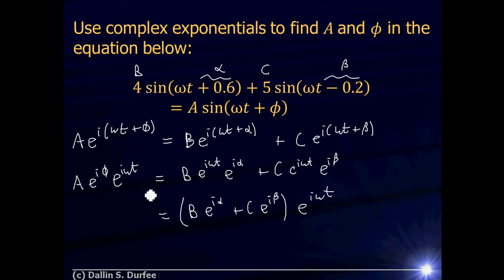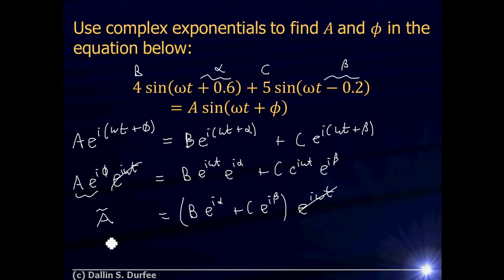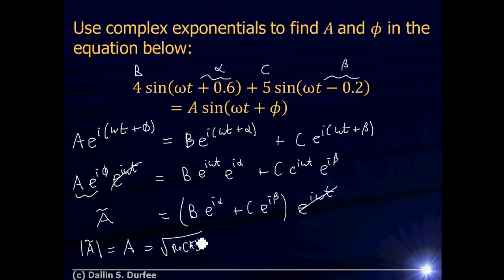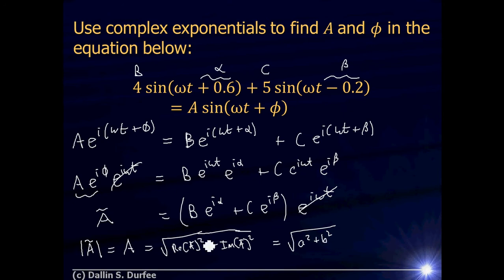Looking at both sides, the e to the i*omega*t terms match, so I can cancel them. I'm just left with A times e to the i*phi equals B times e to the i*alpha plus C times e to the i*beta. This right-hand side is just a complex number — A times e to the i*phi is the magnitude and phi is the phase. I'll call this my complex amplitude A-tilde. Once I have A-tilde, I can find A as its magnitude — the square root of the real part squared plus the imaginary part squared.